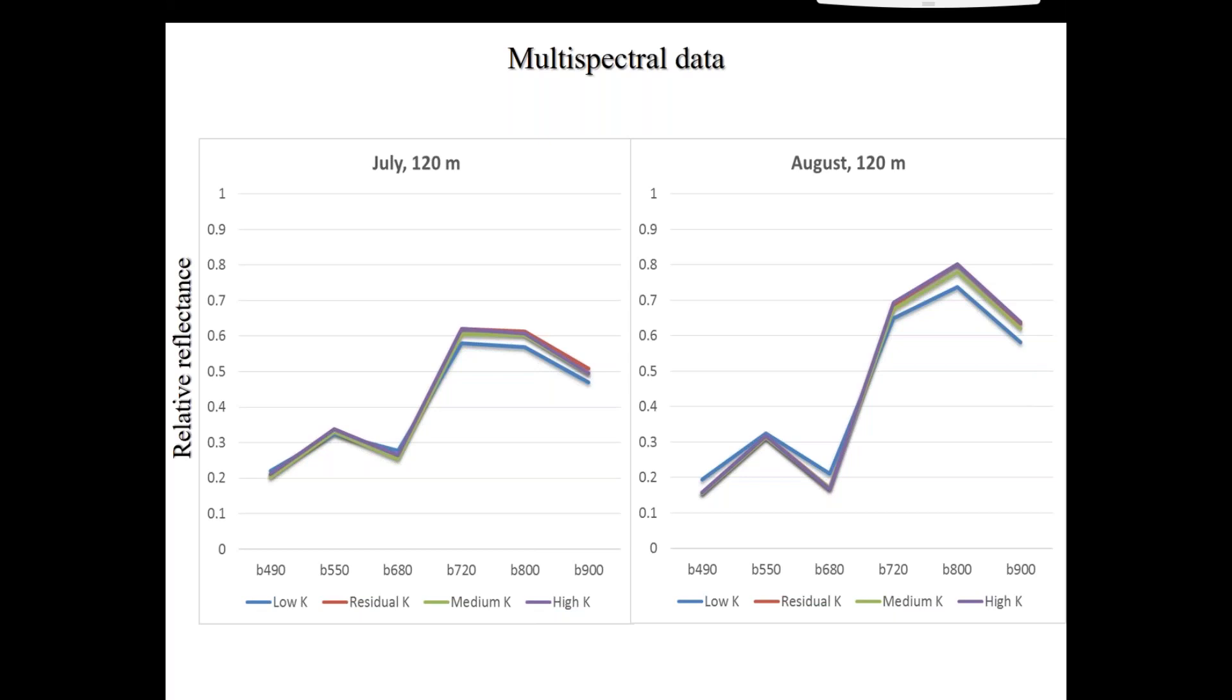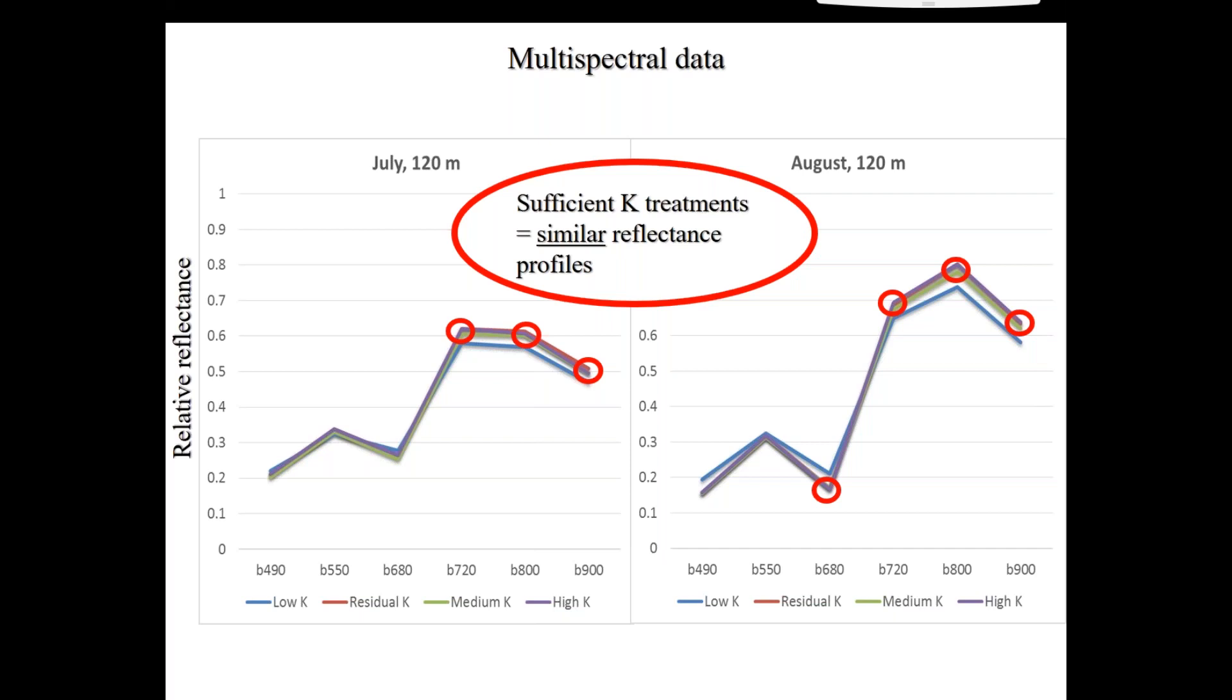Looking at the multispectral camera, so I mentioned there were six bands. We can see the blue, green and red in the visible and the typical response going on here, which I showed before. Fortunately, the sufficient K treatments showed similar reflectance even in the near-infrared.